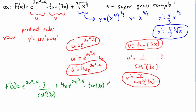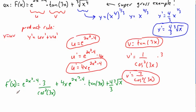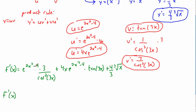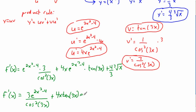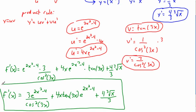Adding the derivative of the last piece — already computed as 4 thirds times cube root of x — and simplifying slightly: the final answer is 3 times e to the 2x squared minus 4 over cosine squared of 3x, plus 4x times tangent of 3x times e to the 2x squared minus 4, plus 4 over 3 times the cube root of x.